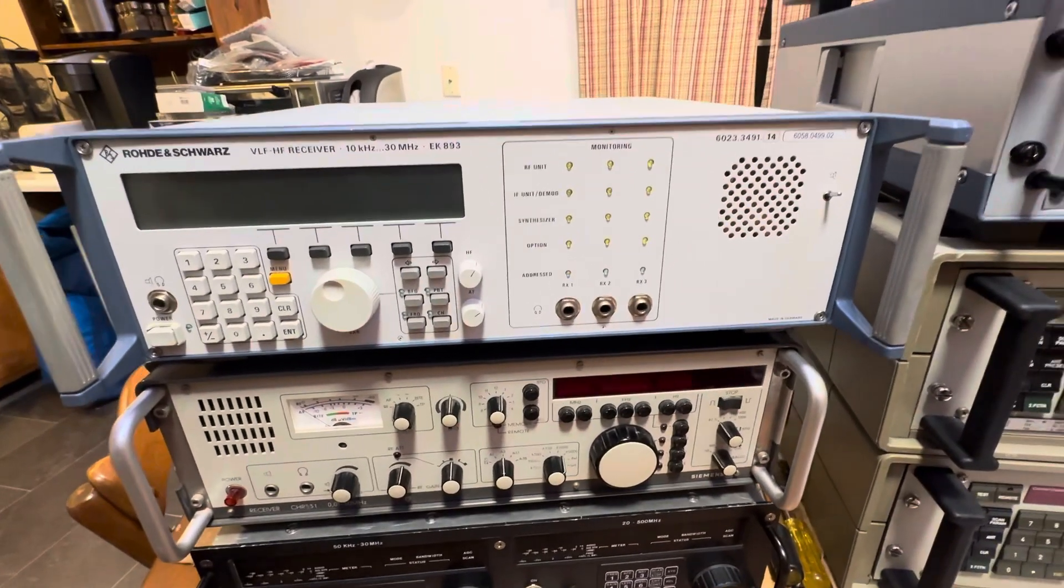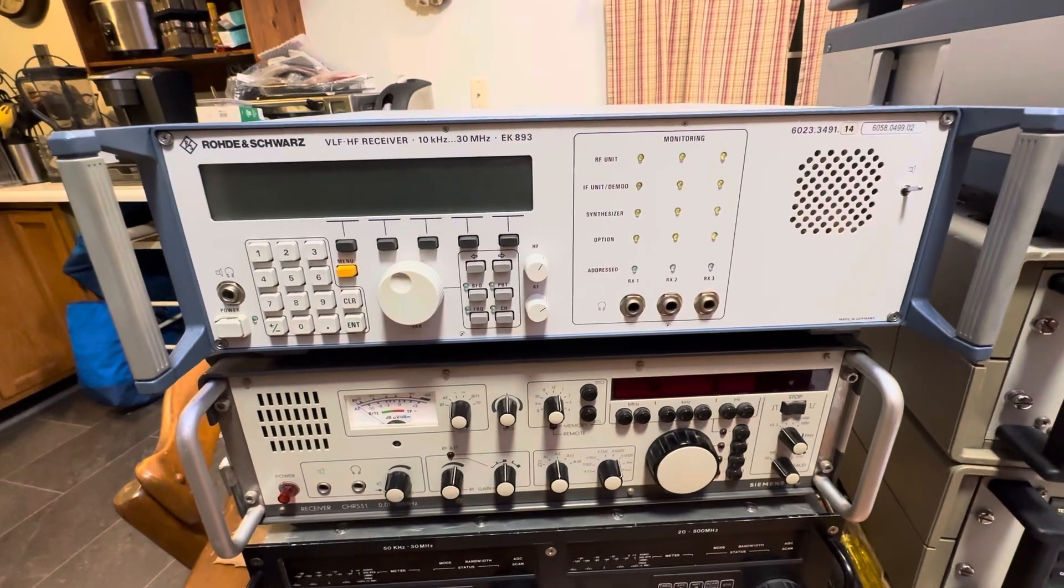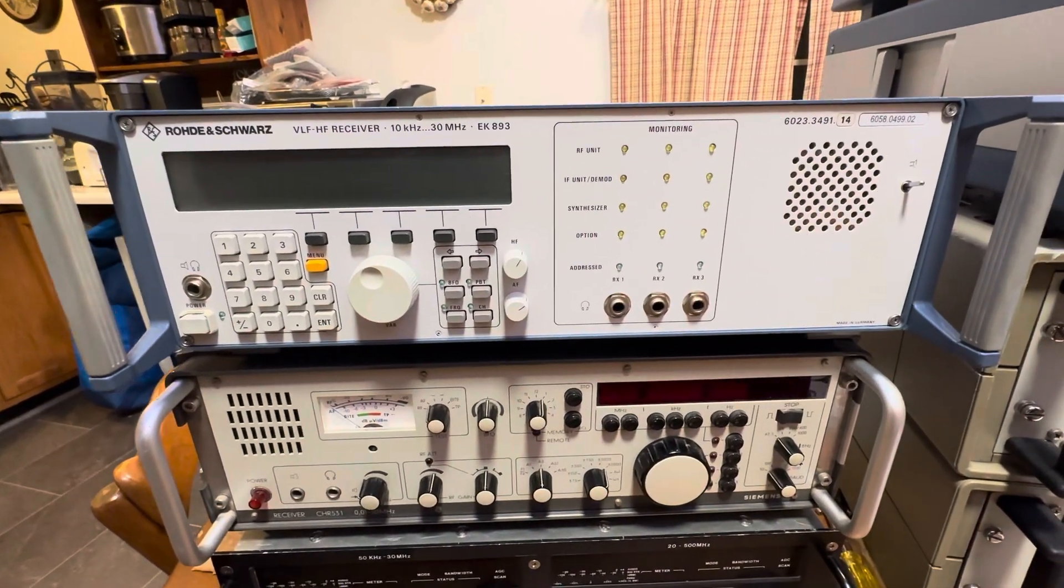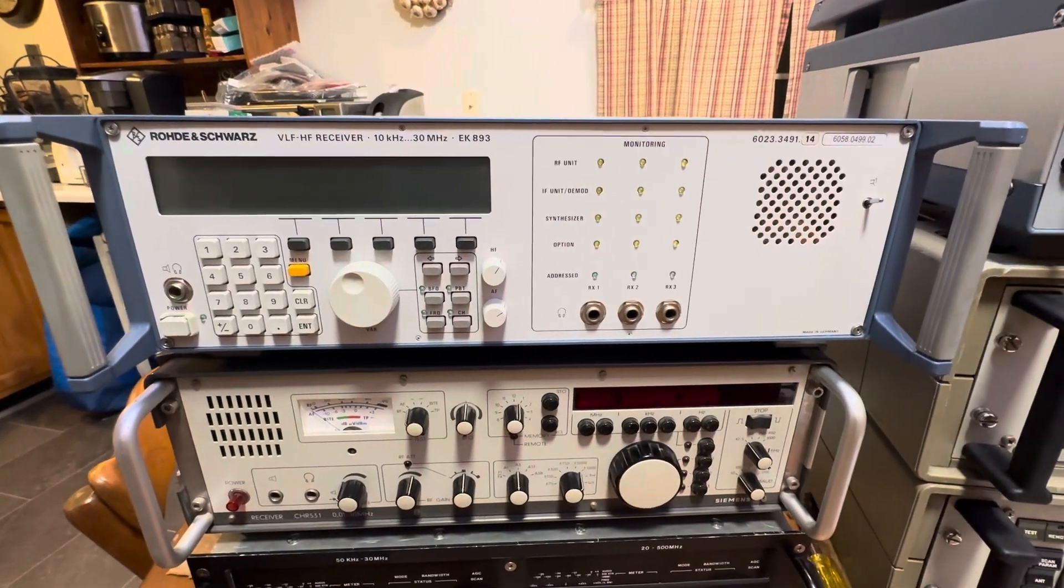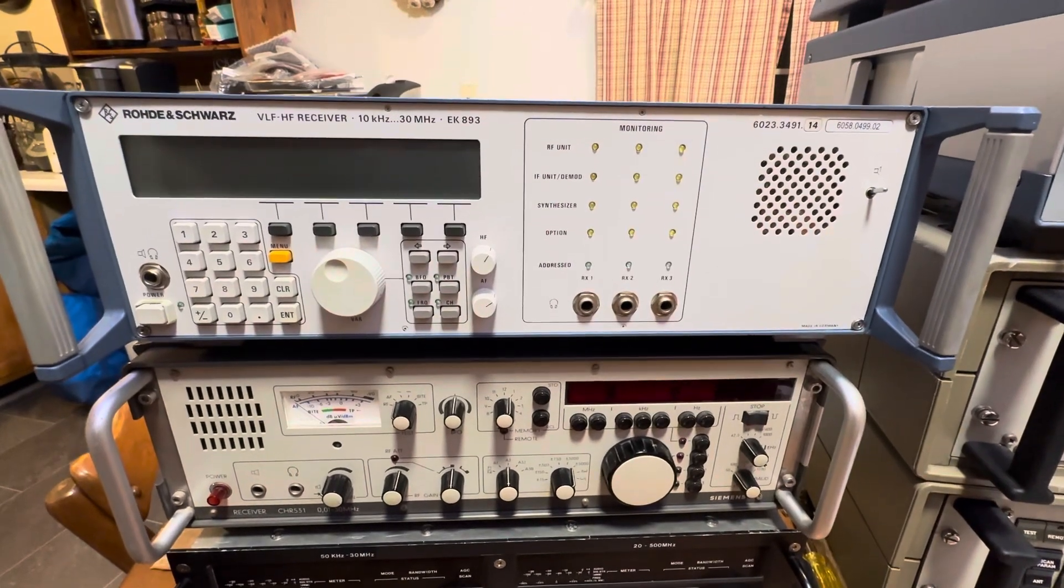I got something special tonight for you, probably many of you haven't seen before. It's in Fred Ostman's book, a picture, but I don't know there are many of these floating around. It's a Rohde & Schwarz VLF-HF receiver, a shortwave receiver, model EK893.